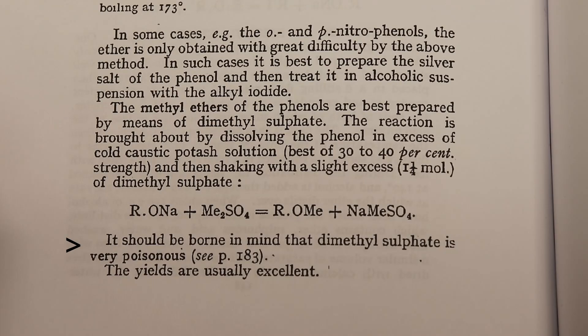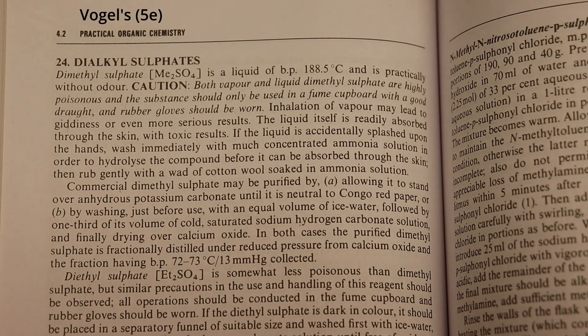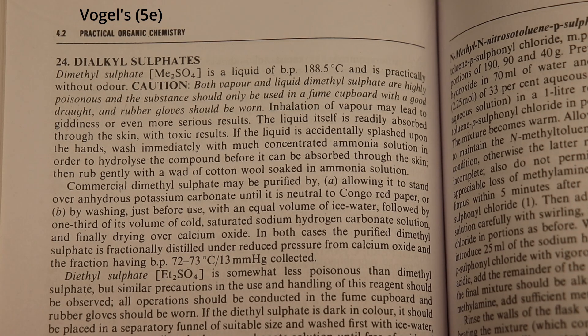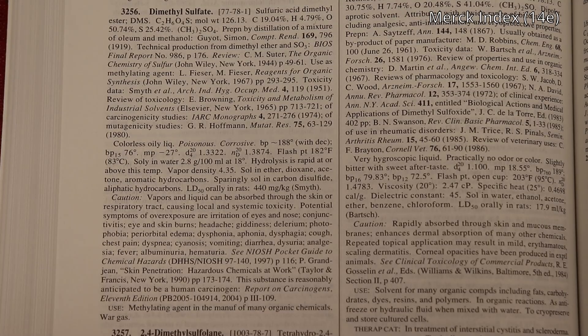Also, one of the immediate response procedures for skin contact with dimethyl sulfate is to soak a wad of cotton with concentrated ammonia solution and rub that into your skin where the dimethyl sulfate contacted. That's to try and hydrolyze as much of the dimethyl sulfate as possible before it absorbs through your skin and starts methylating your DNA and causing a whole host of other ailments.